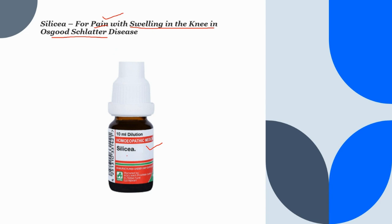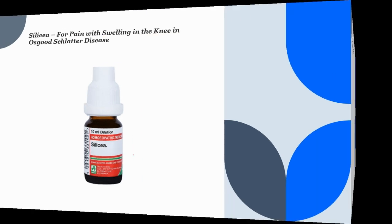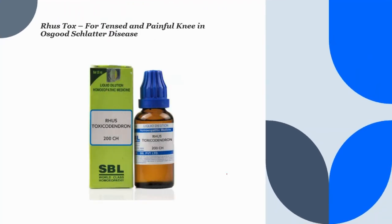The next homeopathic medicine is Rhus Tox, a very wonderful medicine where the knee pain is accompanied with a tensed and tight feeling in the knee joint. The knee is also swollen and stiff with pain, and a burning sensation in the knee joint is present. Standing worsens the knee pain, and great heaviness is felt in the knee.